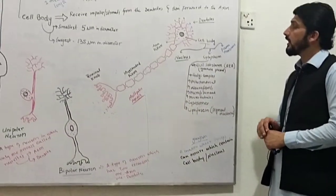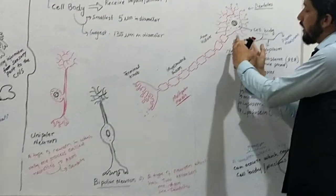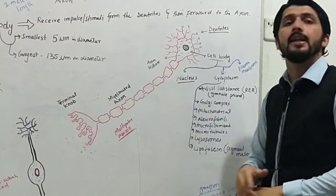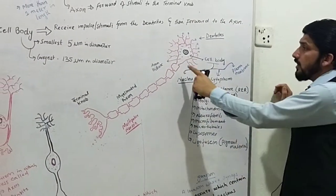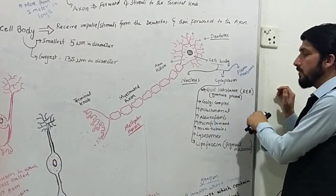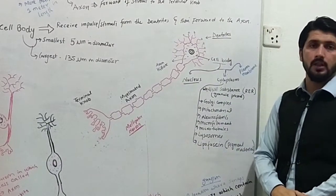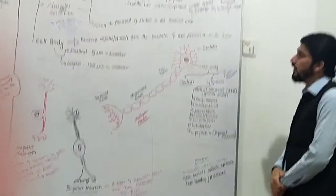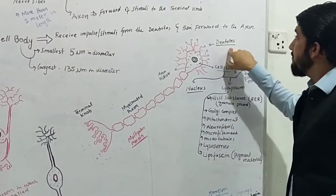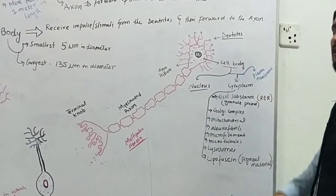Additionally, the cytoplasm contains neurofibrils, microfilaments, microtubules, and lysosomes. Lipofuscins, a pigment protein material, are also present. Importantly, the axon — the process that arises from the cell body — does not contain Nissl substance, rough endoplasmic reticulum, or granules.